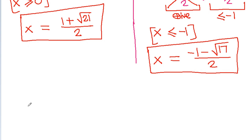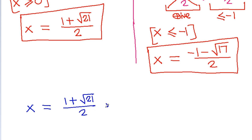Therefore, the two values of x are: x equals (1 plus square root of 21) divided by 2, and x equals (minus 1 minus square root of 17) divided by 2.